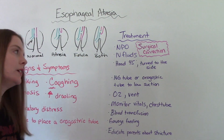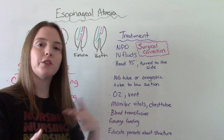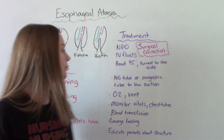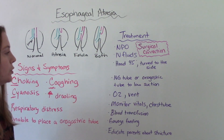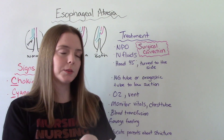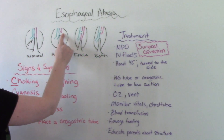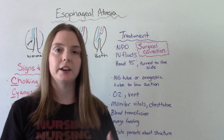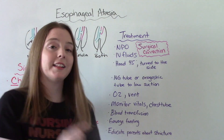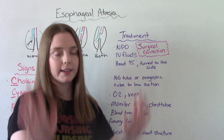They're going to be on IV fluids. We want to keep their head elevated in the isolette, usually at a 30 to 45 degree angle, with their head turned to one side so that they don't aspirate. We're going to place an NG tube or orogastric tube — usually the physician places it in this circumstance — on low suction. That tube goes into the blind pouch to help manage those secretions, because remember, there is excessive drooling and secretions. They will likely also need oxygen or even a ventilator for a short time.